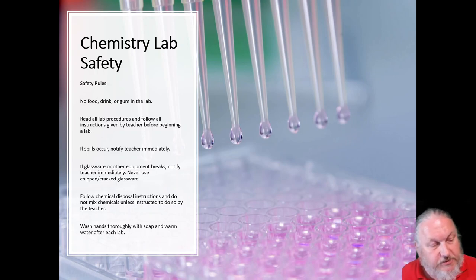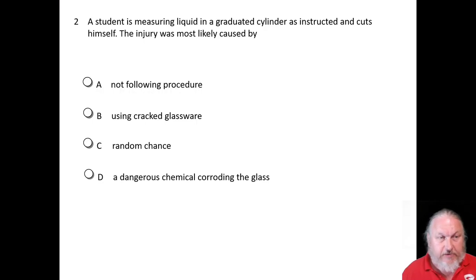Let's do a check for understanding. A student is measuring liquid in a graduated cylinder as instructed and cuts themselves. The injury is most likely caused by what: not following procedure, using cracked glassware, random chance, or a dangerous chemical corroding the glass? Let's pause. Of course the answer to that is B, using cracked glassware.